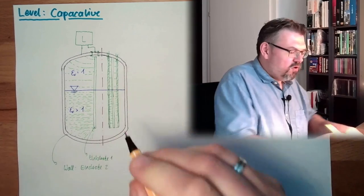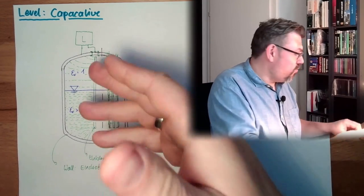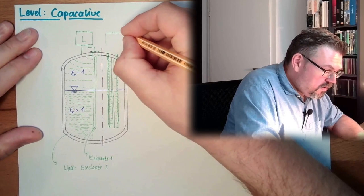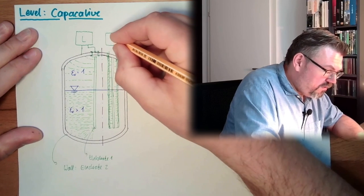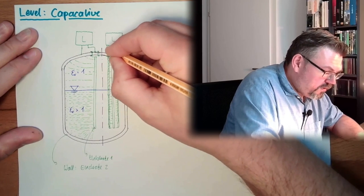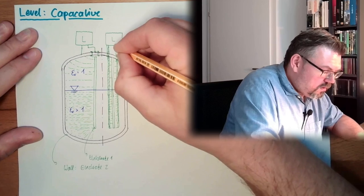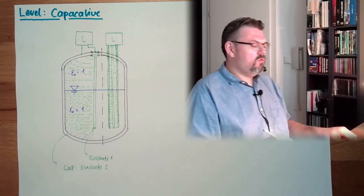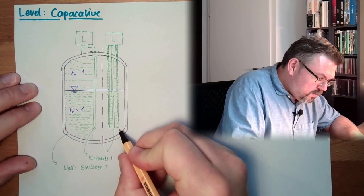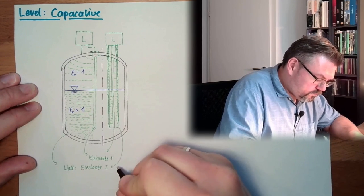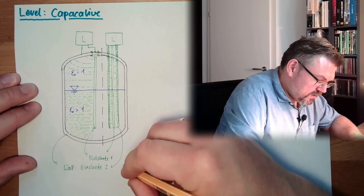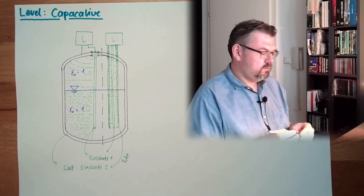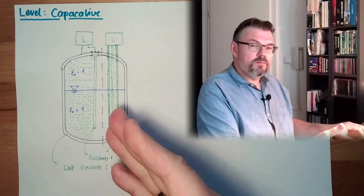But this time, it's not the wall which is the second electrode. But if I draw here also the level transducer, we have to connect the two electrodes. Electrode one, electrode two. In this case, it's a tube. Would also be a possibility.